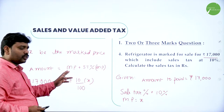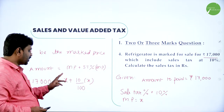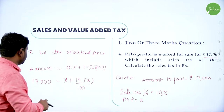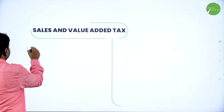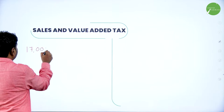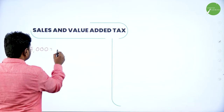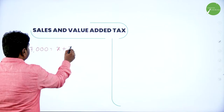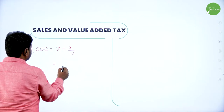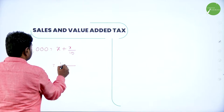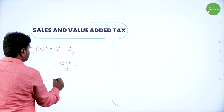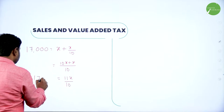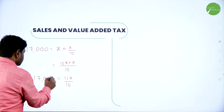Market price we don't know — we need to find it. So let X be the market price. Sale tax percent is 10%, so 10% of X. Understanding the given problem and writing this equation is important. So: 17,000 = X + 10/100 of X. Simplifying: 17,000 = X + X/10. Taking LCM of 10: 17,000 = (10X + X)/10 = 11X/10.